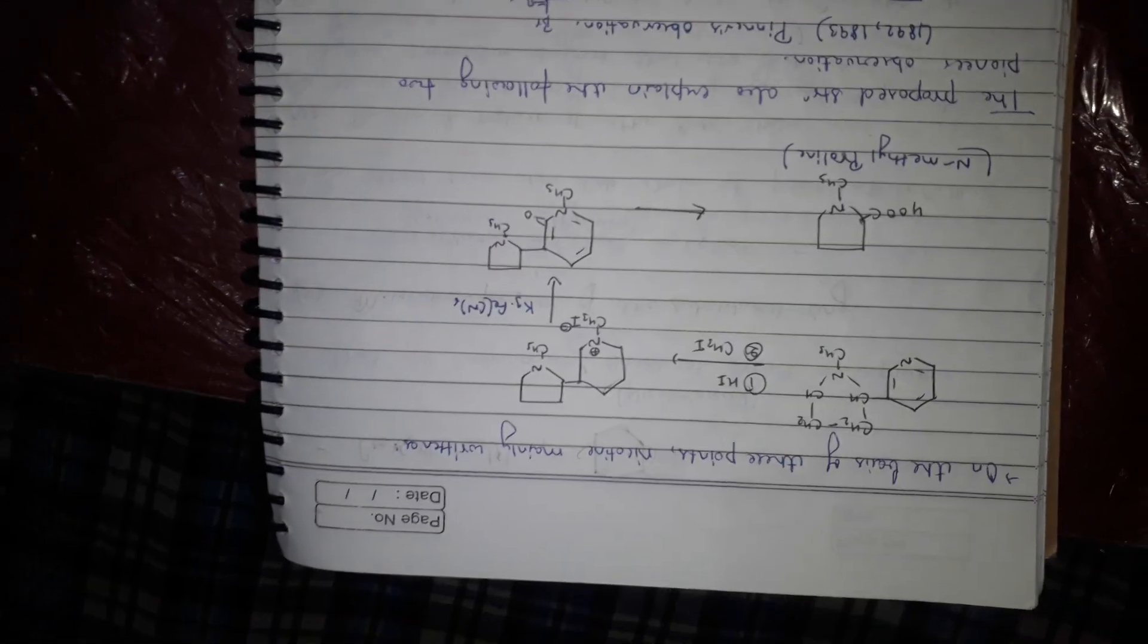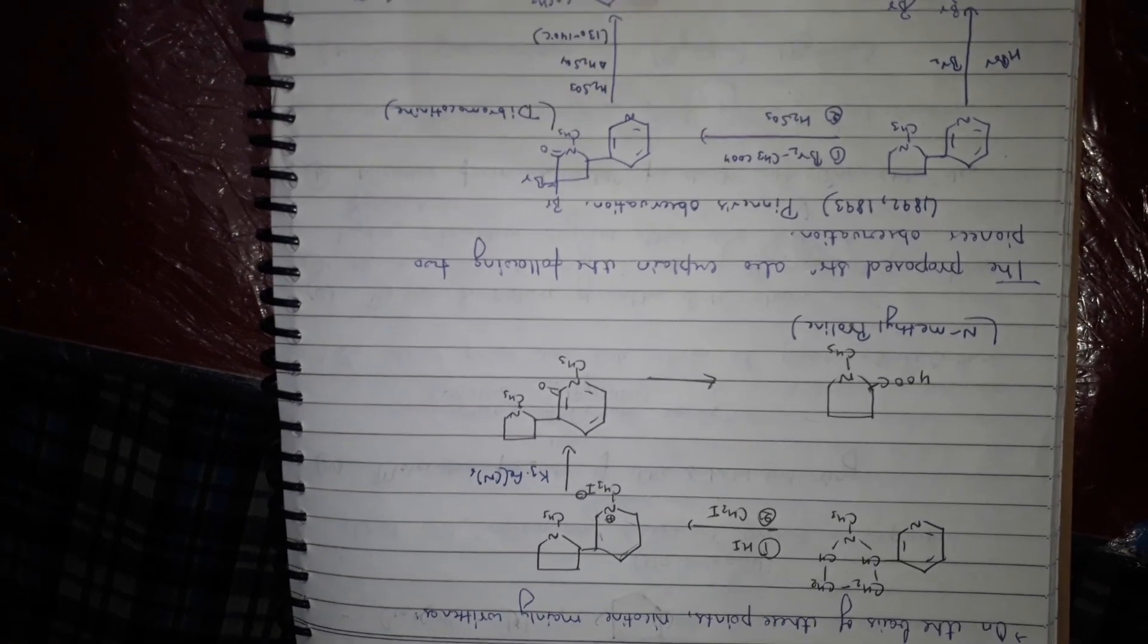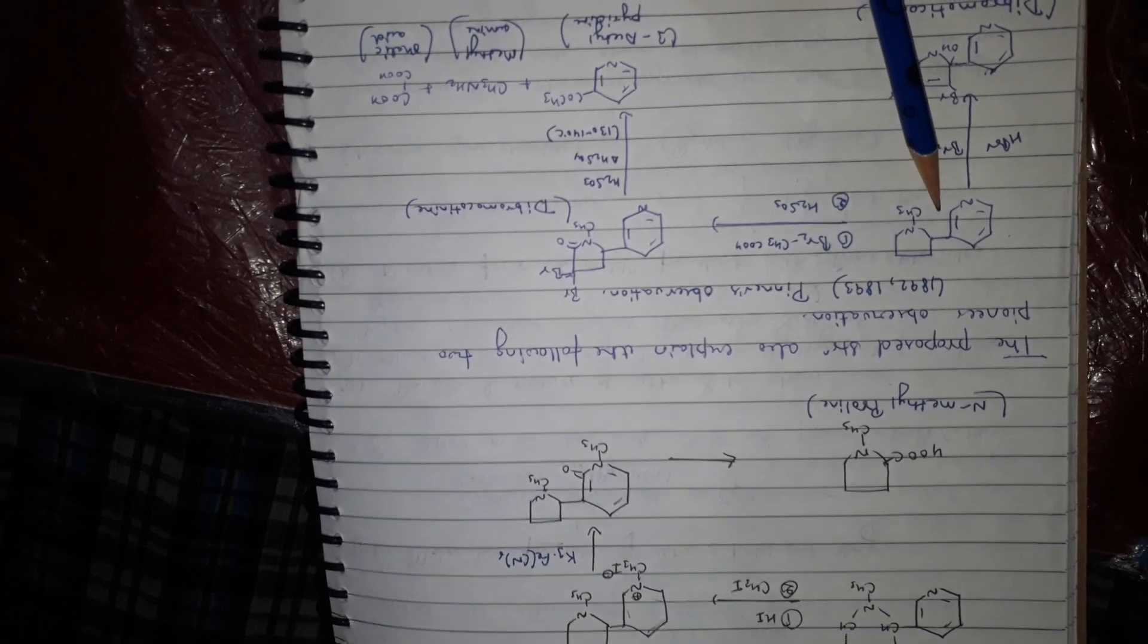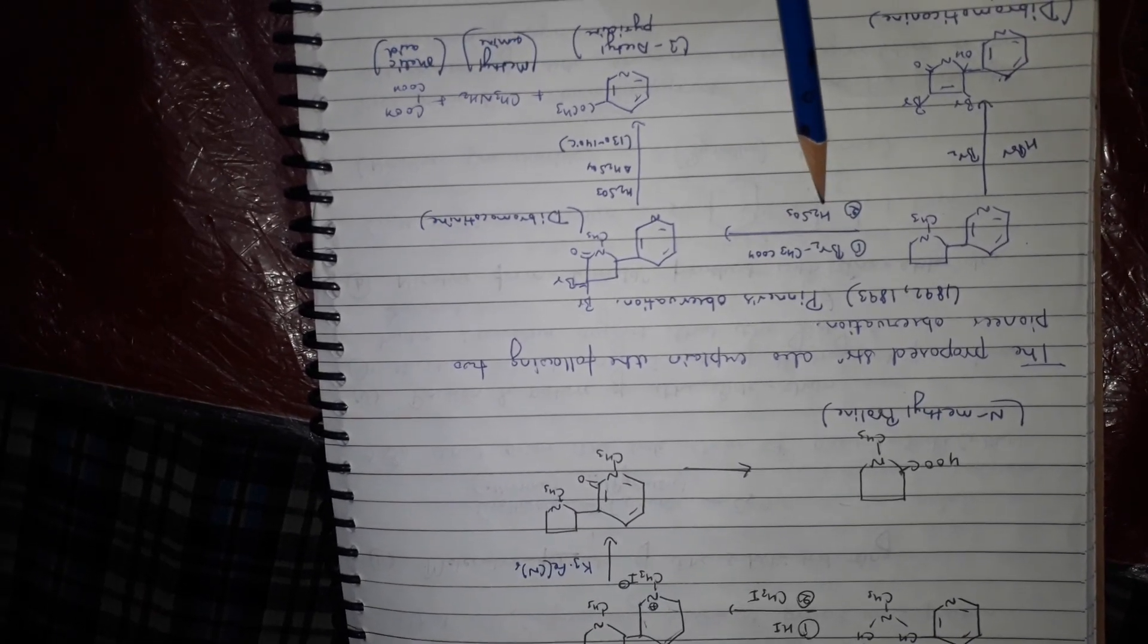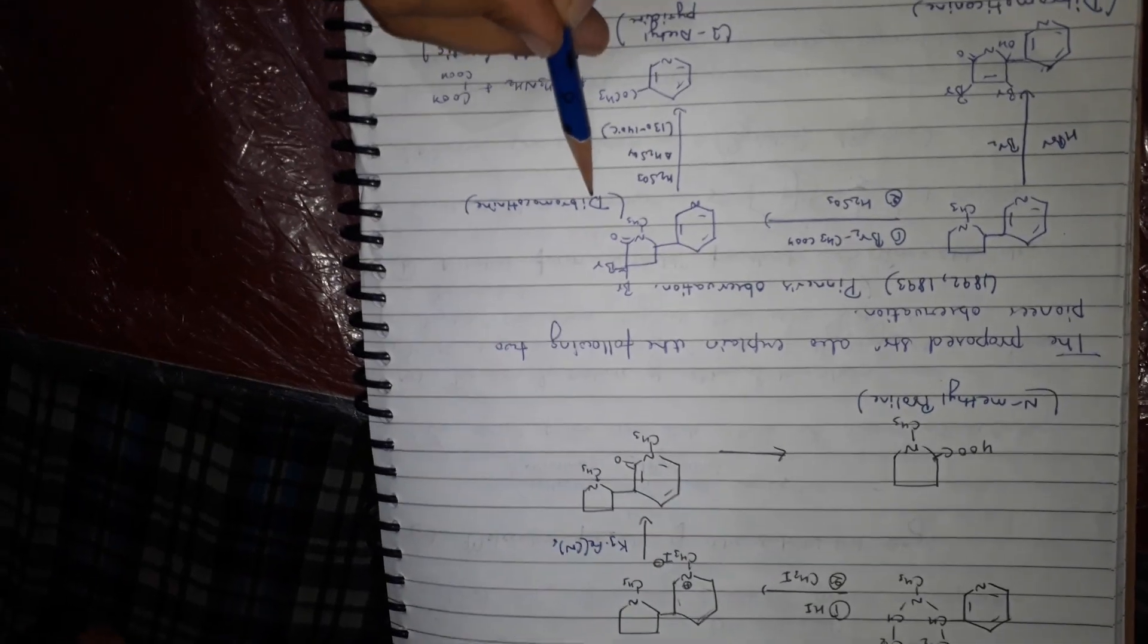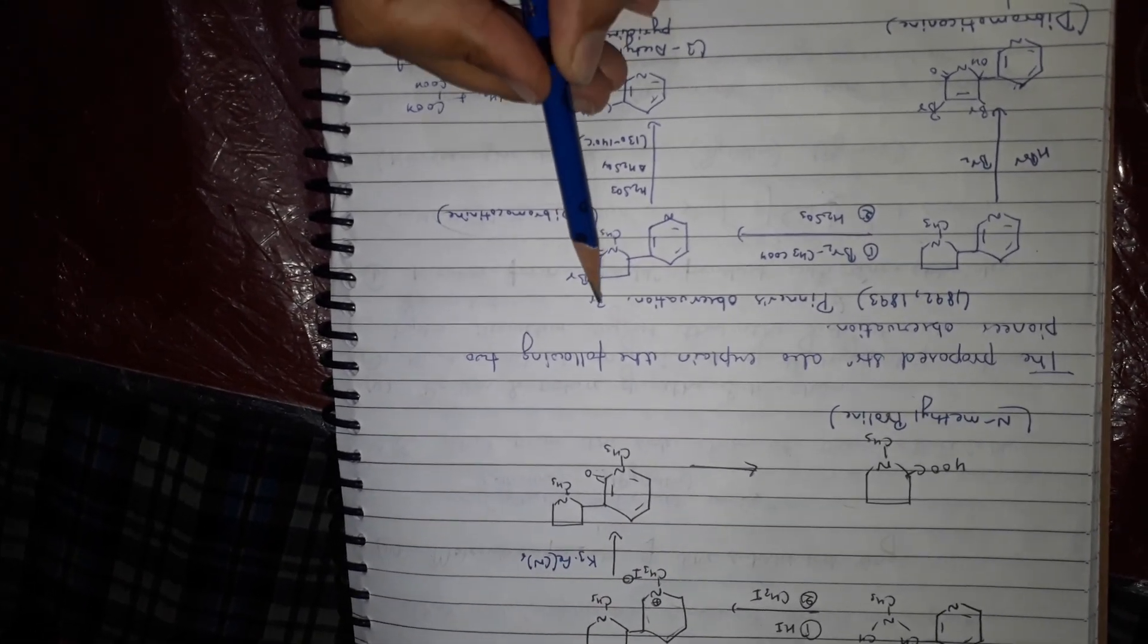The structure is also explained by Pinner observation. Nicotine structure - this is nicotine structure. On Br2, CH3COOH, and H2SO3 it becomes dibromo nicotine. There's presence of this bond here, bromines on dibromine.